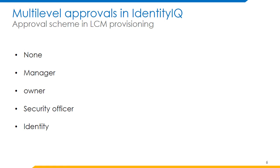Let's discuss what the fields for approval scheme represent. Owner: the object owner gets the approval item — for role approvals this is the role object owner; for entitlement approvals this is the entitlement object owner. Manager: the manager gets the approval item — here, manager is the requested identity's manager. Security Officer: the identity in the variable 'securityOfficerName' gets the approval item. Identity: the identities or work groups in the variable 'approvingIdentities' get the approval item. We can set up approving identities in the LCM provisioning workflow, which contains a list of identities that require approval.